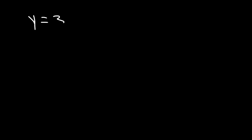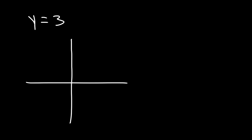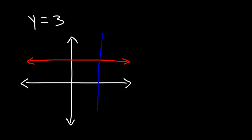Now what about the equation y equals three? Does it pass the vertical line test? Y equals three is a horizontal line, and if we draw a vertical line it's going to pass the vertical line test — it touches it only at one point.